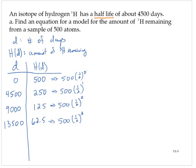I see a pattern here. The problem is, how do I get from 0 to 0, 4,500 to 1, 9,000 to 2, and 13,500 to 3? What I might recognize is that 4,500 divided by 4,500 is 1, 9,000 divided by 4,500 is 2, and 13,500 divided by 4,500 is 3.